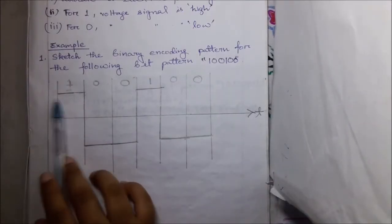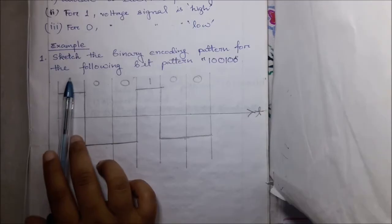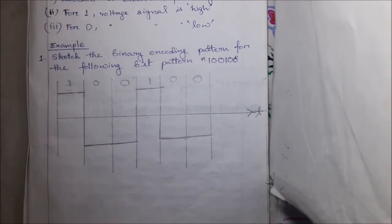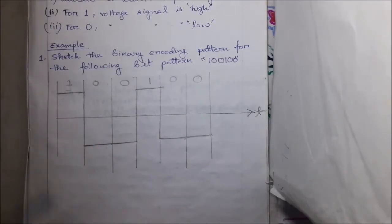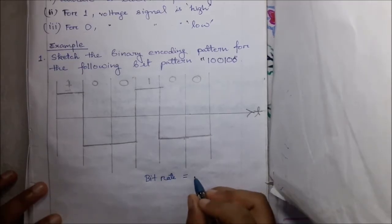For one bit, we use only one signal — high for one and low for zero. If we use only one voltage signal to represent a digital bit per clock tick, then it is called unipolar encoding. Here bit rate is equal to one. Bit rate is the number of bits transferred per unit time. Baud rate is also one — baud rate is the number of signals transferred per unit time. So in binary encoding, bit rate is equal to baud rate.